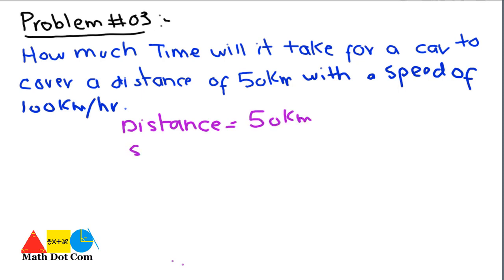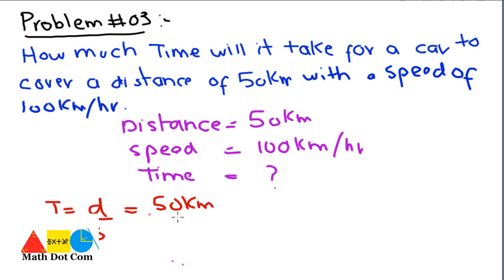Let's see what is given. We are given the distance, 50 km, and the speed, 100 km/hour. We have to find the time. We will apply the formula t = d/s, distance over speed. Distance is 50 km and speed is 100 km/hour. We solve it as 1/2. The km cancels out and the hour moves up: 1/2 hour or 0.5 hours.